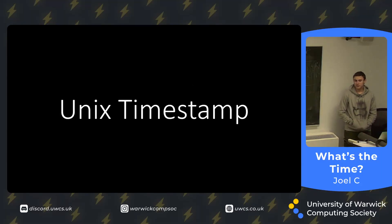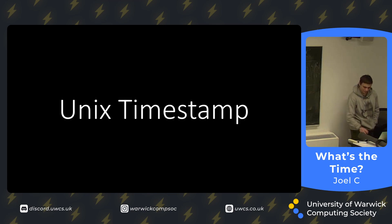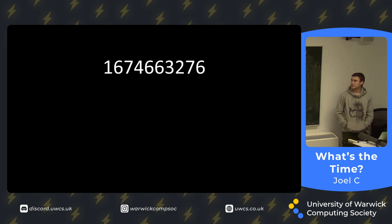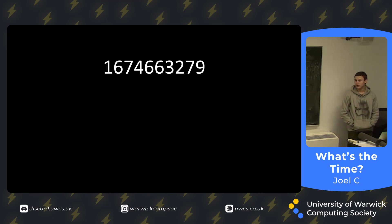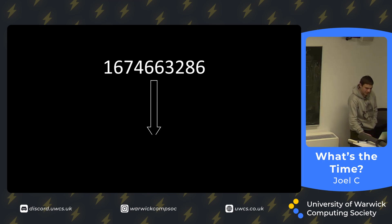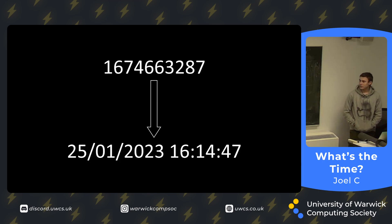Well, they use something called the Unix timestamp. And all that is, is just a number in your computer that's going up by one every second — tick, tick, tick — and from that, you can work out the date and the time.